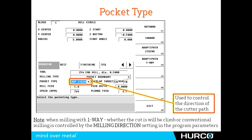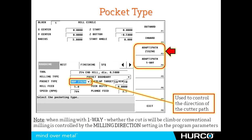In the Herco control conversationally, when we create a pocket, we used to have just two settings: spiral inward, starting from the outside of the pocket making its way towards the center, or spiral outward, going from the center to the outside. We now have two other settings where we determine the Adaptive Path settings. Number one is the zigzag — the tool is going to zigzag in the path: climb mill, conventional mill, climb mill, conventional mill, back and forth until it's removed all the material.